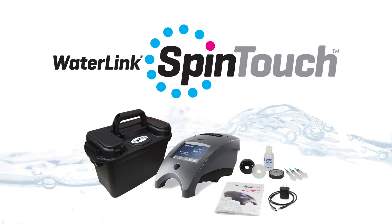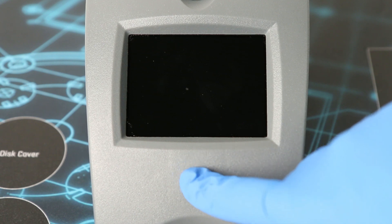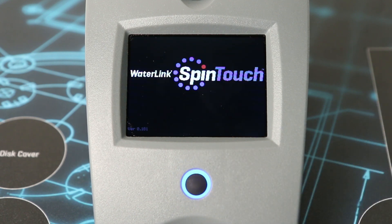This is a demonstration on how to use the WaterLink SpinTouch Photometer. Press the power button and hold until the meter turns on.